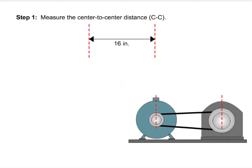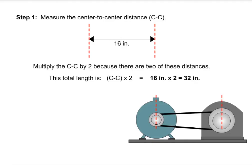Step 1. Measure the center-to-center distance. Multiply the center-to-center distance by 2, because there are two of these distances.